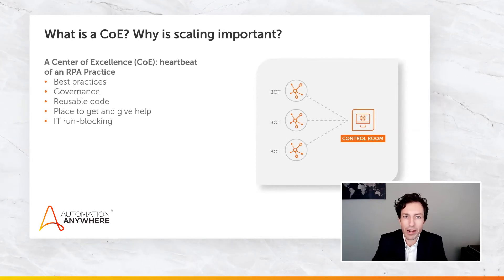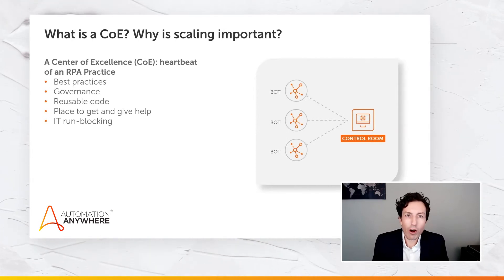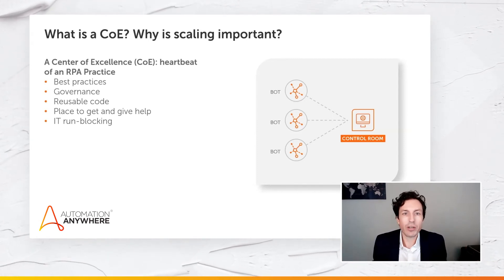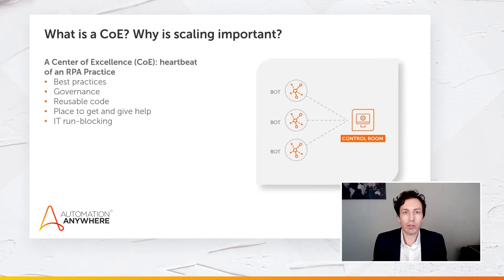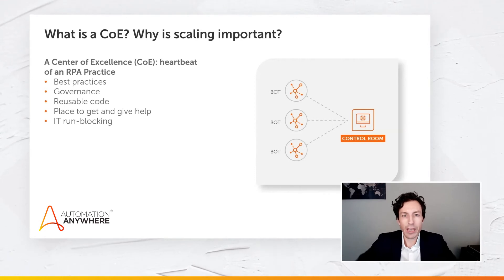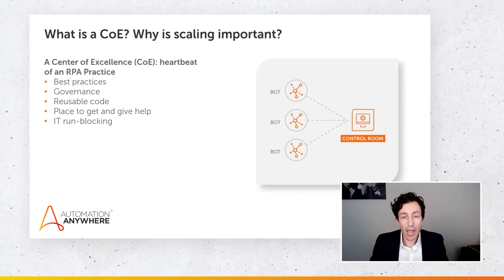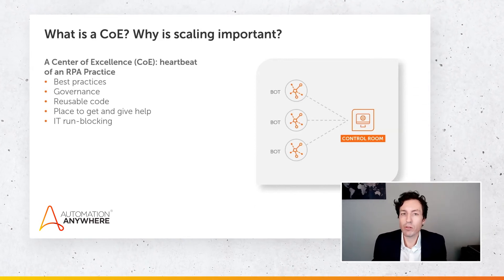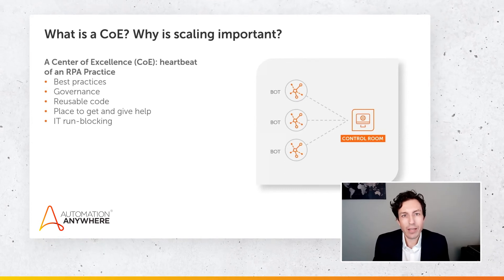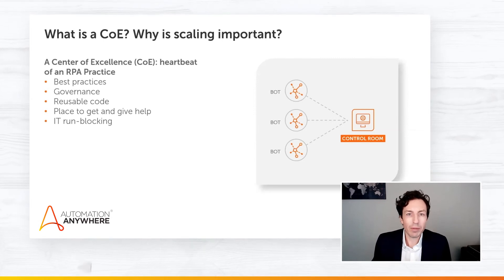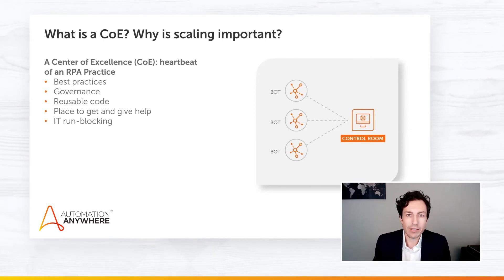If someone wants to do anything with it, they have to come through me. I think of RPA as the exact opposite of that. If I bring in Automation Anywhere and set it up, I want everyone to be able to use it. Setting up that IT run blocking is part of enabling that — how do we do VDIs, how do we establish bot runners, how do we request a new bot runner, where is my development environment, how do I connect to these different environments. All of that should be set up by the COE.